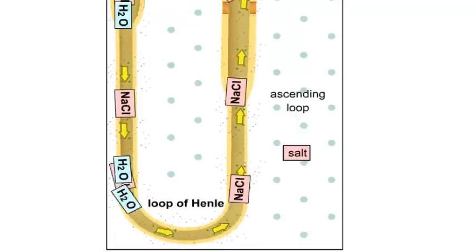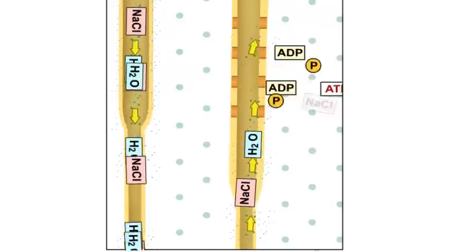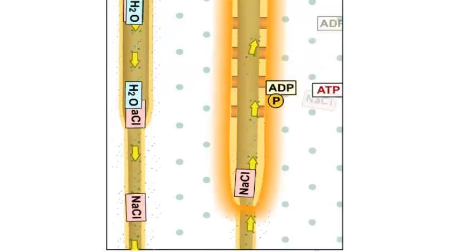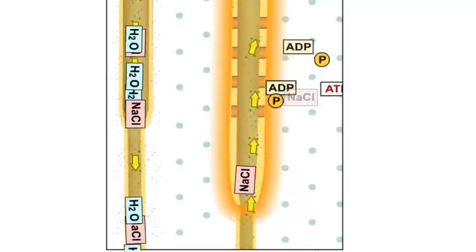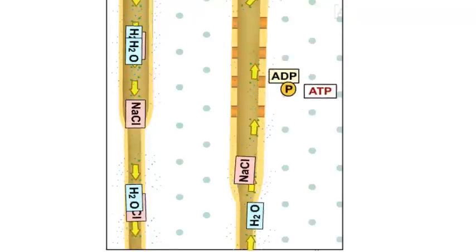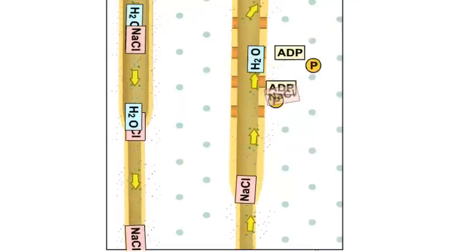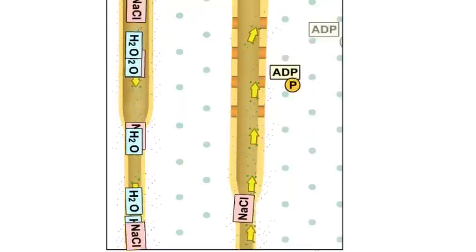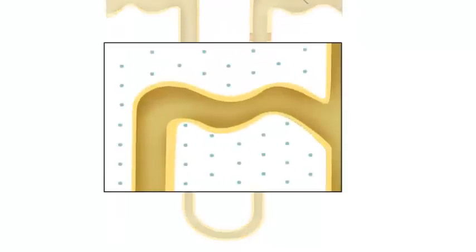This part of the tubule is relatively impermeable to water, so the filtrate becomes more dilute as it makes its way up. In the thick ascending portion of the loop of Henle, the tubule remains impermeable to water. Much of the salt in the filtrate has already diffused out, so additional salt continues to leave the filtrate only by active transport from the cell wall of the loop.